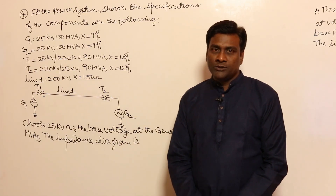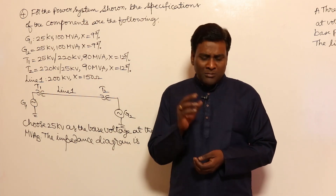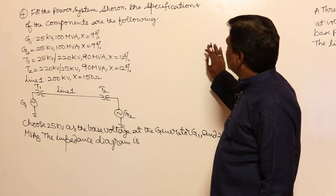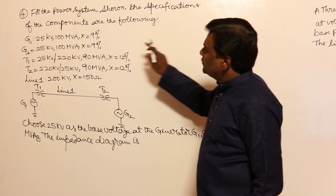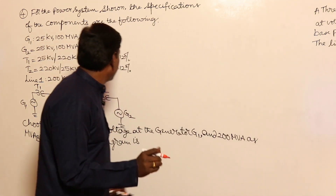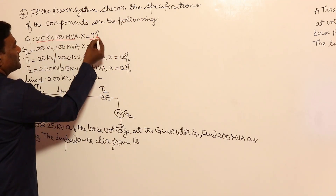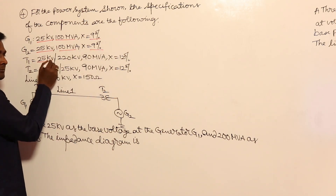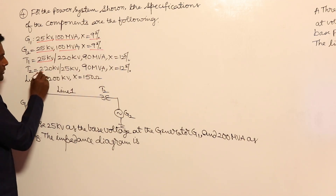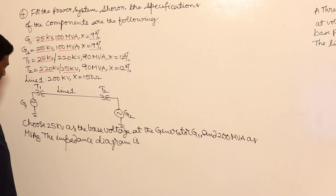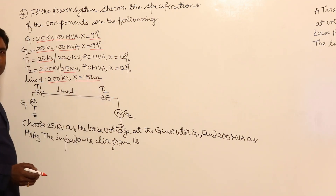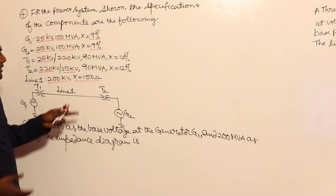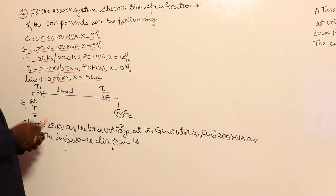Now let us take a gate question. For the power system shown, component specifications are: G1 — 25 KV, 100 MVA, 9%; G2 — 25 KV, 100 MVA, 9%; T1 — 25 KV to 220 KV; T2 — 220 KV to 25 KV; transmission line — 200 KV, X equals 150 ohms. Since X is given directly in ohms, the 200 KV rating is unnecessary data. Base: 25 KV base voltage and 200 MVA as MVA base.